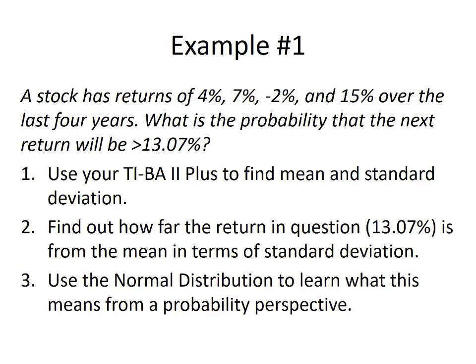Let's take a look at our first example. A stock has returns of 4%, 7%, negative 2%, and 15% over the last four years. What is the probability that the next return will be greater than 13.07%? Students look at problems like this and panic. First, they wonder how they're going to calculate a probability, forgetting that the normal distribution is there to provide that probability. The first step is to use your TI BA2+ to find the mean and standard deviation — specifically the sample standard deviation, since we're only looking at a sample of returns, not the whole population.